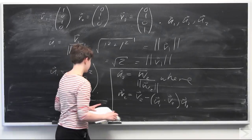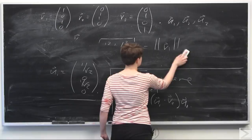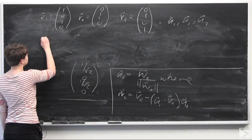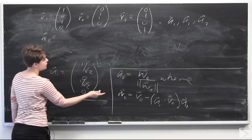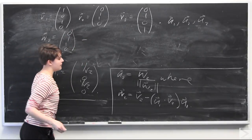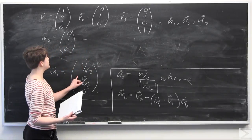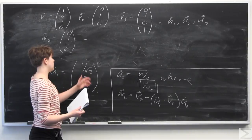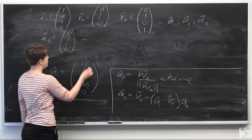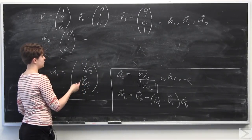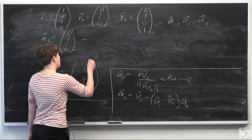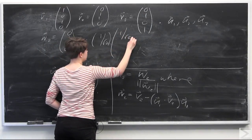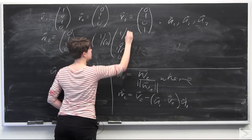So w2 is going to be equal to v2, which is (0, 1, 1, 0), minus u1 dotted with v2. We compute the dot product component-wise: 1 over root 2 times 0 is 0, 0 times 1 is 0, 1 over root 2 times 1 is 1 over root 2, and 0 times 0 is 0. So the dot product is 1 over root 2, and this is all times u1, which is (1 over root 2, 0, 1 over root 2, 0).